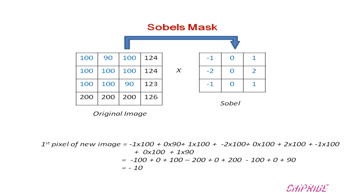We are going to slide the Sobel's mask over this image — that's why I've marked them in blue. What happens is we multiply element-wise. For example, minus one into 100 — you can see how the value of the new pixel is calculated. Minus one multiplied with the first 100, then zero with the second pixel 90, then one again with 100, and minus two with 100, then zero with 100 and two with 100, then minus one with 100, zero with 100 and one into 90. You sum it all up and you have a value which is going to be the first pixel value. Even if this first pixel value is negative, it will be mapped to unsigned int, so it will remain zero.